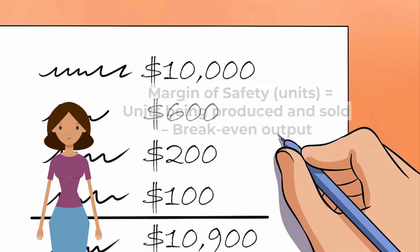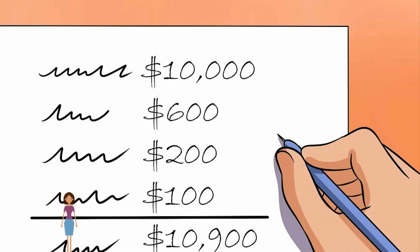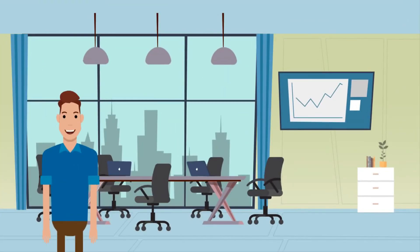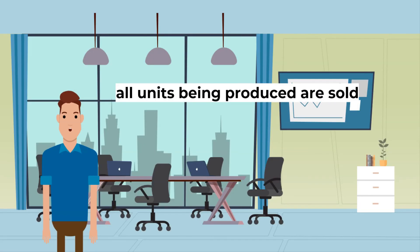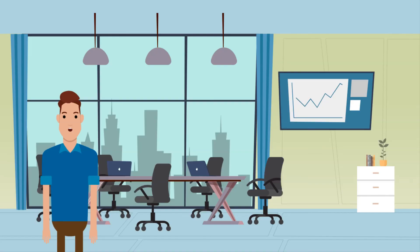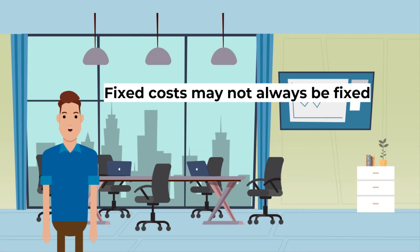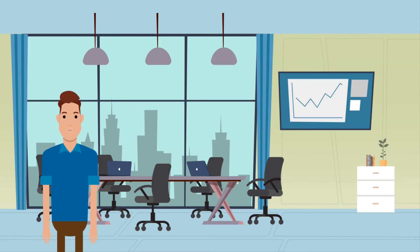What are the limitations of breakeven charts? They are constructed assuming that all units being produced are sold. In practice, there is always an inventory of finished goods. Not everything produced is sold off. Fixed costs may not always be fixed as the scale of production changes. If more output is to be produced, an additional factory or a new machine may be needed that increases fixed costs.